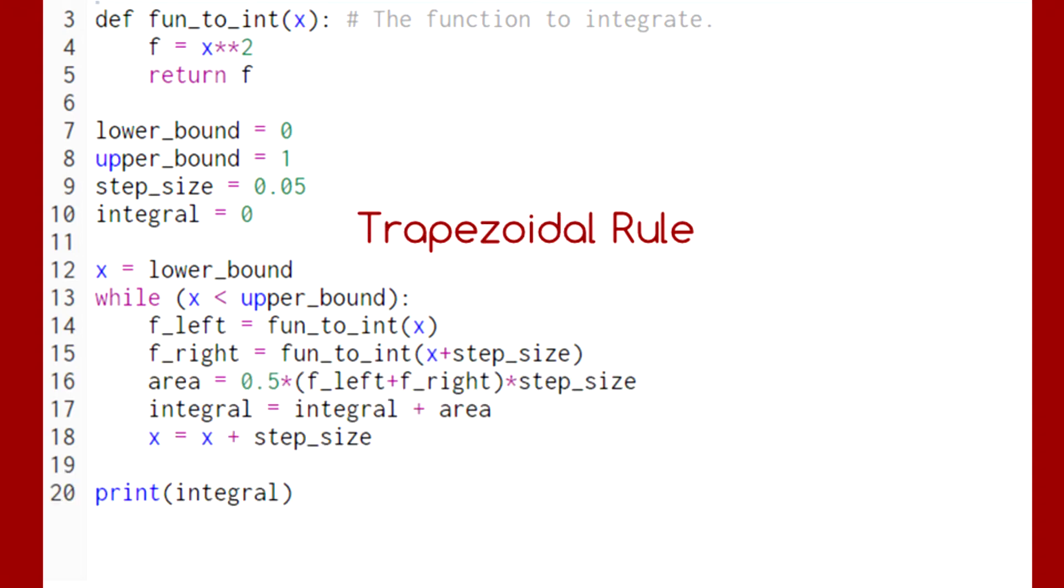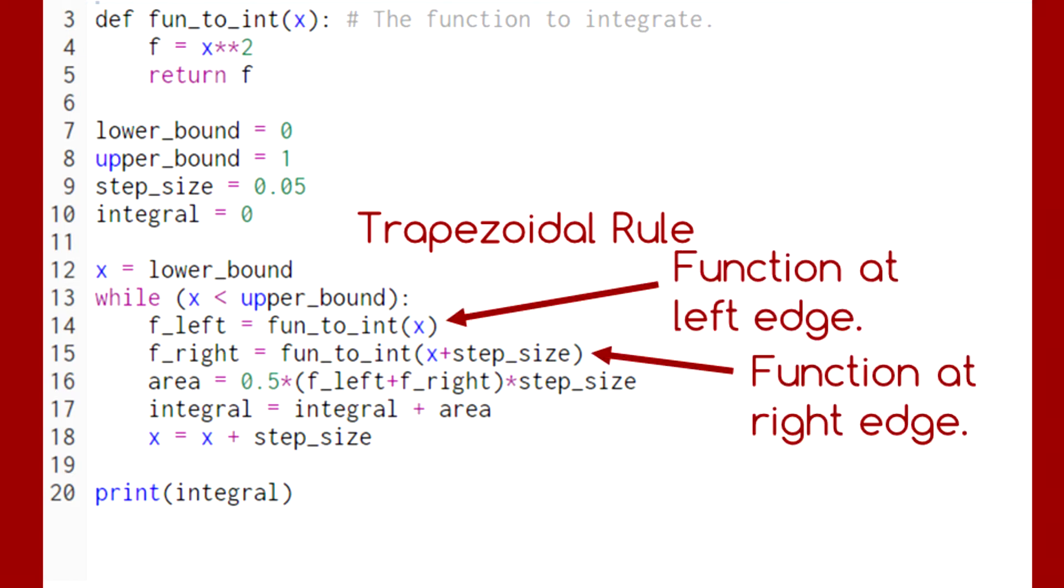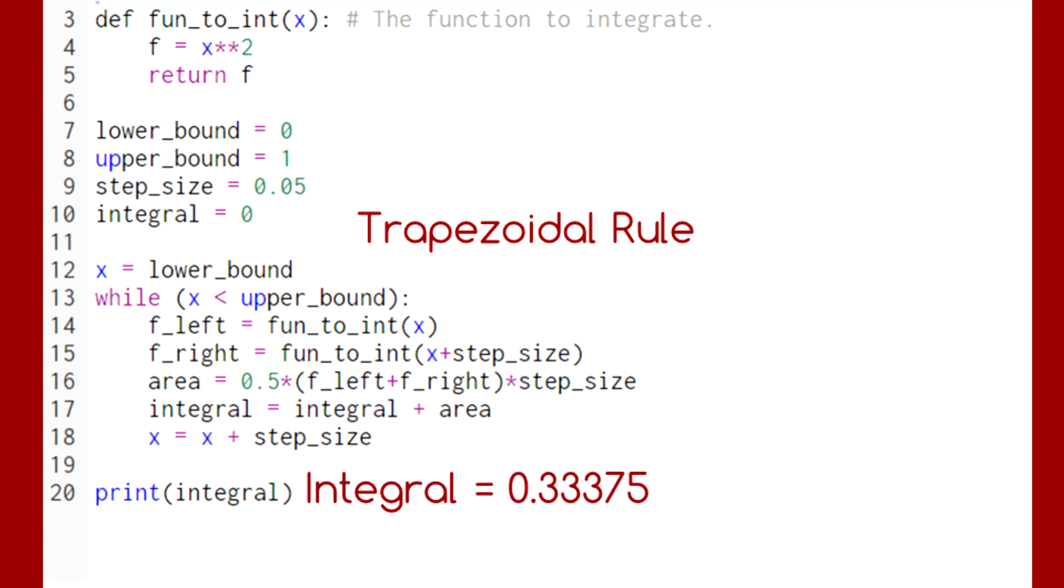In this next code, we're using the trapezoidal rule, which involves evaluating the function at the left edge of the interval and at the right edge of the interval, and then averaging those function values in the trapezoid formula here. This method also gives us an answer that is okay, but not great.